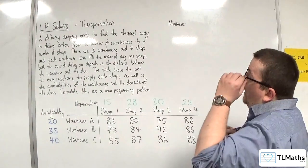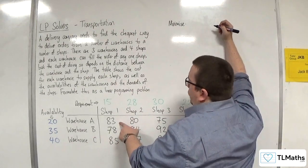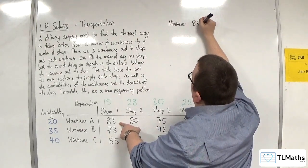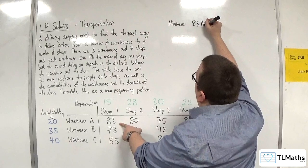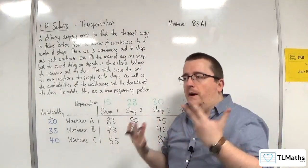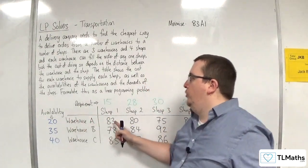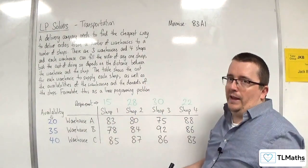So how do we set up our objective function? Well, we're going to have to have the cost. So 83 times by A1, because A1 will be the number or the amount that I've got to send to shop one, and each one costs 83.